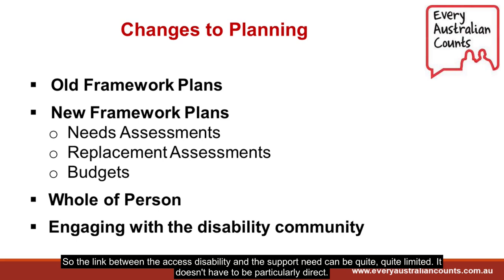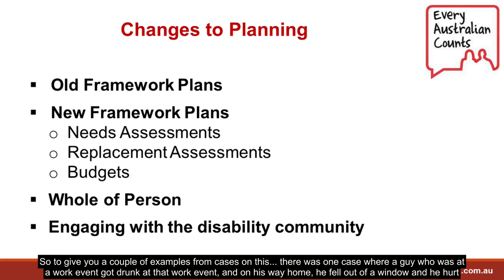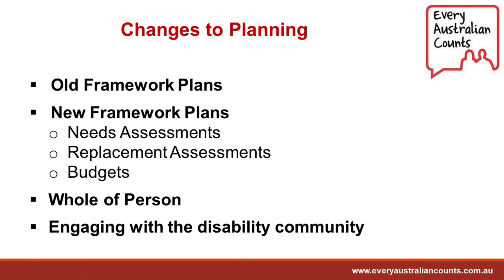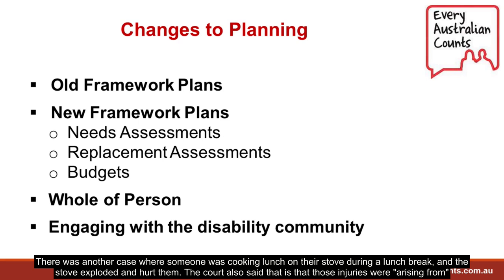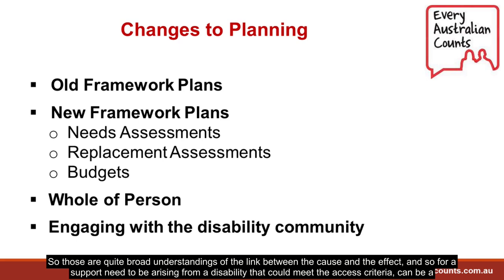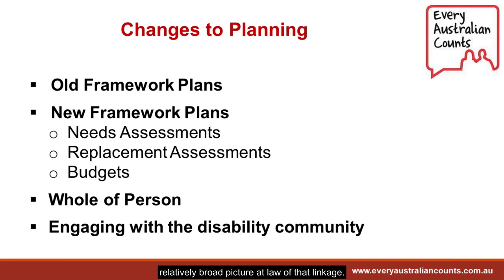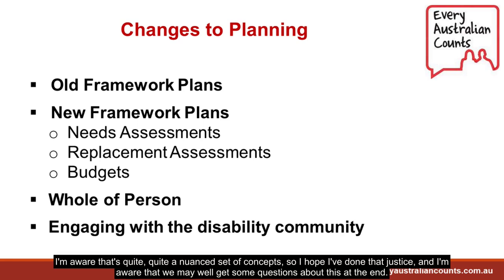To give examples from cases: there was one case where a man at a work event got drunk, and on his way home fell out of a window. The court decided his injuries were 'arising from' his work because he'd been at a work event beforehand. In another case, someone was cooking lunch on their stove during a lunch break, the stove exploded and hurt them — the court also said those injuries were arising from their work. So those are quite broad understandings of the link between cause and effect. A support need 'arising from' a disability that could meet the access criteria can represent a relatively broad picture of linkage at law.